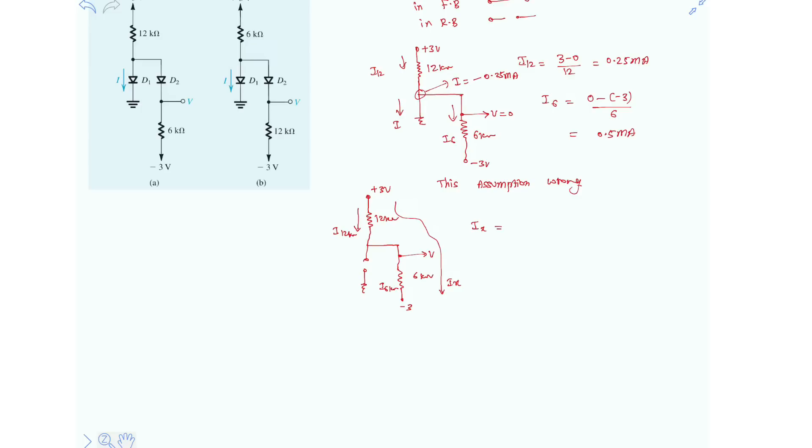Ix is nothing but 3 minus of minus 3V over 12 plus 6kΩ. So now it is 6 over 18kΩ, that is nothing but 1 over 3mA. So now, let's calculate for voltage V.